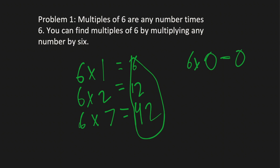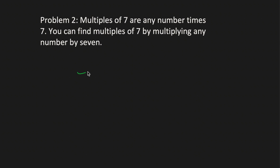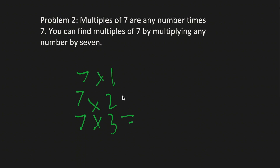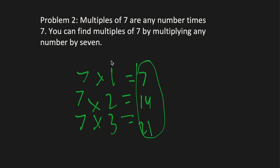Moving on to Problem 2. Multiples of 7 are any number times 7. You can find multiples of 7 by multiplying any number by 7. This is practically the same thing — 7, 14, 21 are all multiples of 7. 7 can be multiplied by any number except 0. And that's about that.